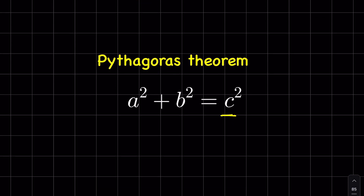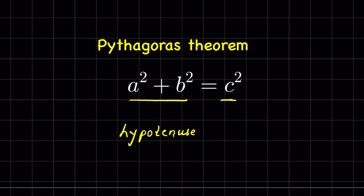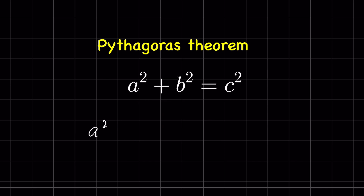According to the Pythagorean theorem, c squared is equal to a squared plus b squared — that means the hypotenuse equals the square root of the sum of squares of the other two sides, or equivalently, a squared plus b squared equals c squared. Since c is 277, we have 277 squared. Let this be equation one.